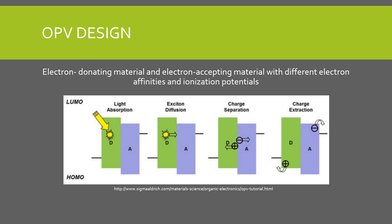Organic cells absorb light in a similar manner to inorganic ones. A photon is absorbed by the electron donating material, promoting a valence electron to a conduction exciton. If the exciton is close enough to the donor-acceptor interface, then the exciton will encounter an electric field, which will cause the electron to move into the acceptor and the hole to move into the donor. Each carrier will drift until it reaches its respective electrode, creating a current and producing a voltage.